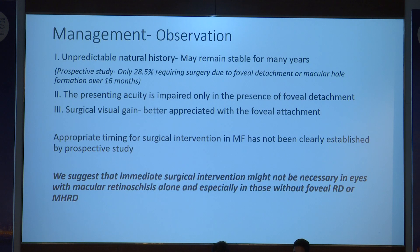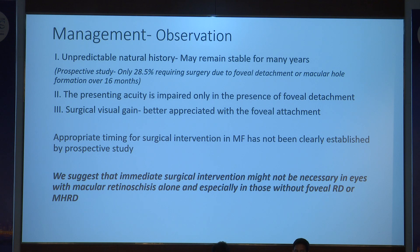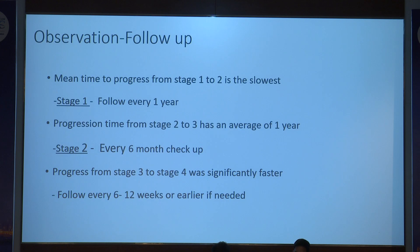For stage 1 and stage 2, as we know progression takes around 40 months and natural history is unpredictable — it may remain stable for many more months or years. Immediate surgical intervention should not be considered for stage 1 or stage 2, but these eyes need regular follow-up. Mean time to progress from stage 1 to 2 is the slowest. Stage 1 disease should be followed probably every one year, stage 2 every six months, and stage 3 generally around 6 to 12 weeks.